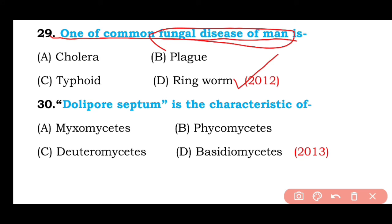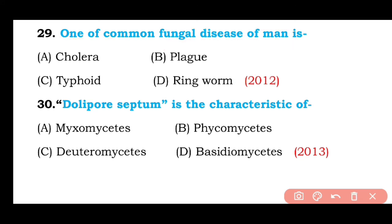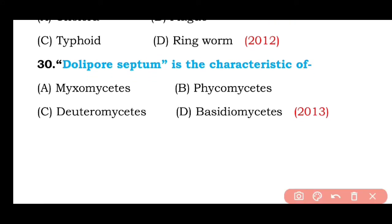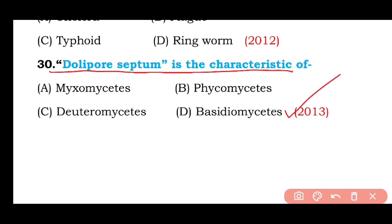Question number thirty: Dolipore septum is the characteristic of Myxomyces, Phycomyces, Deuteromyces, or Basidiomyces? The correct answer is option D — dolipore septum is present in the phylum Basidiomyces.